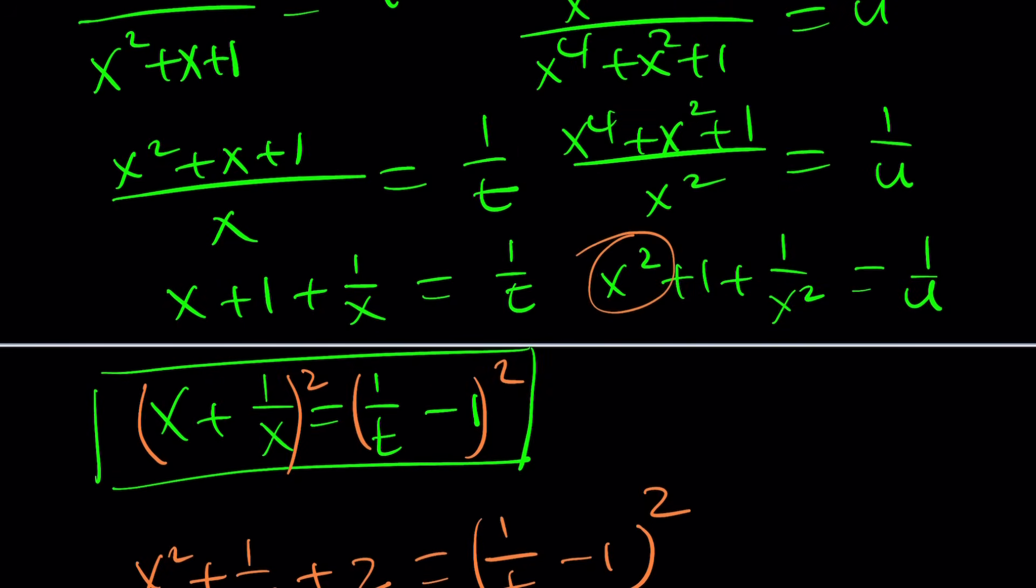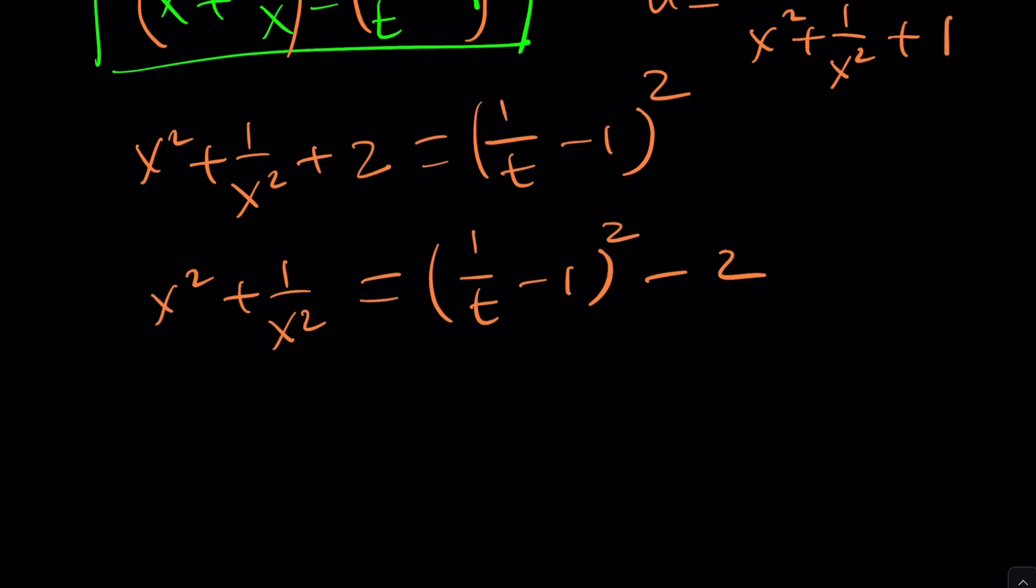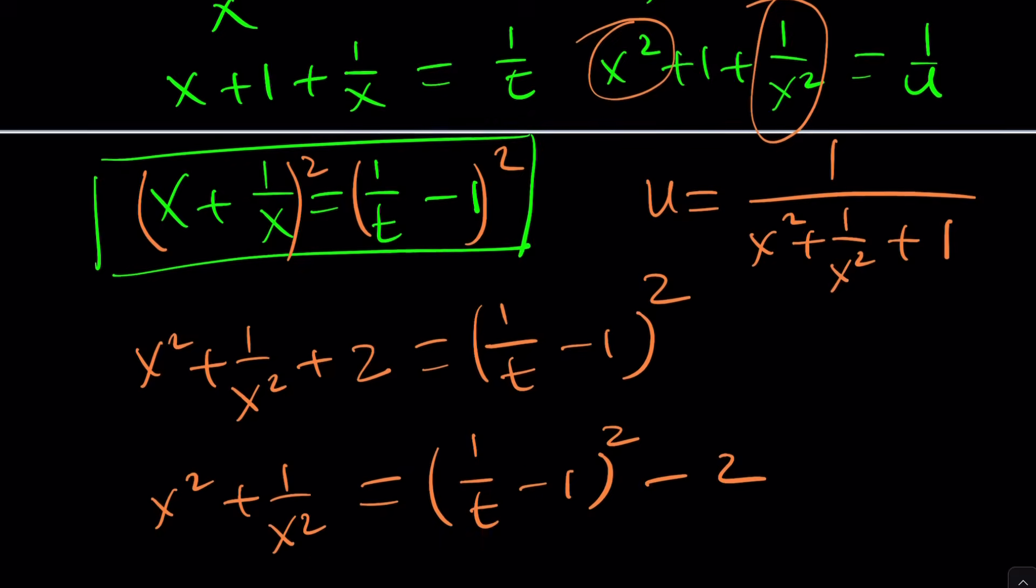Now, why is that significant? Because that's something I can substitute on the right-hand side. But what is u, though? u is going to be 1 over that. So let's go ahead and write it that way. This is u, and now we have f of t, right? So f of t equals u. Isn't that awesome?